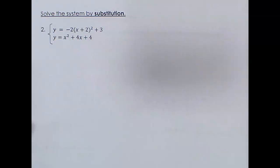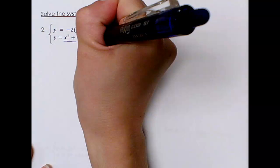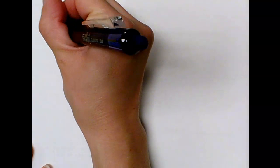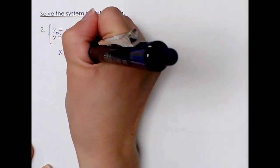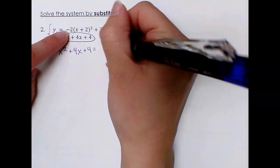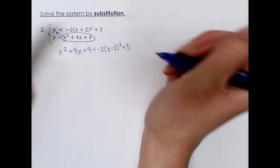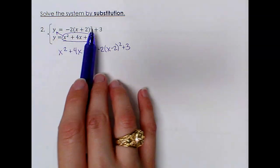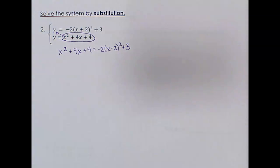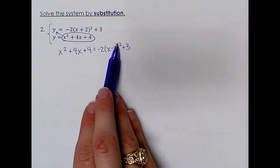Next problem, solved by substitution. Both equations are already solved for y, so I'm going to take what y equals in one of them and substitute it for y in the other equation. So instead of y equals, I have x squared plus 4x plus 4 equals negative 2 times x minus 2 squared plus 3. This one looks a little crazy. I noticed that we've got x squareds in both of them, so that means there are two parabolas here. I do need to expand the right side because I can't do anything until those parentheses are gone.